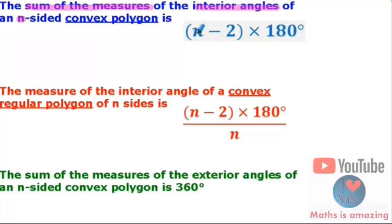The formula is (n - 2) multiplied by 180, where n is the number of sides. If we have a regular polygon and we want to know the measure of one angle of it, we have the same (n - 2) times 180, but divided by n to find the measure of one angle.